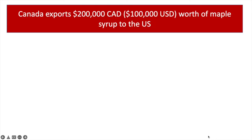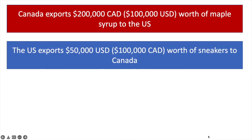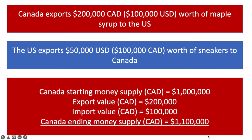Canada exports 200,000 Canadian dollars or 100,000 US dollars worth of maple syrup to the US. The US exports 50,000 US dollars or 100,000 Canadian dollars worth of sneakers to Canada. Canada's starting money supply was 1 million Canadian dollars. The value of their exports was 200,000 Canadian dollars and the value of their imports was less at 100,000 Canadian dollars. So Canada has an increase in the money supply and their ending money supply is 1.1 million Canadian dollars — more money has now entered Canada than has left.